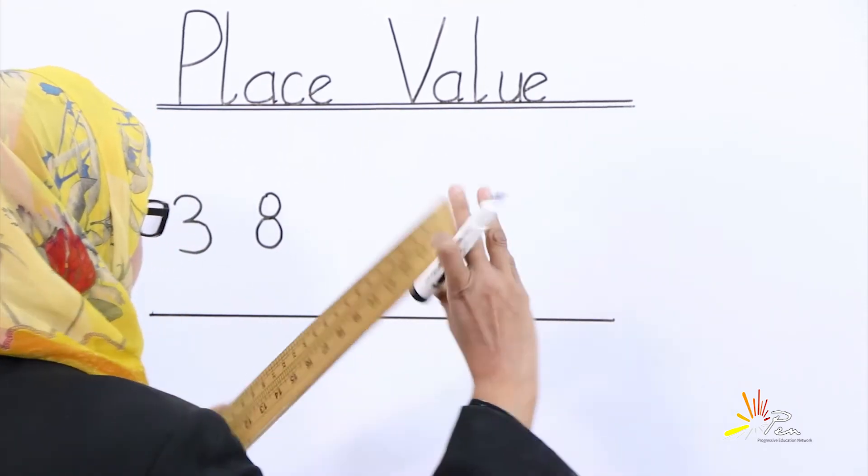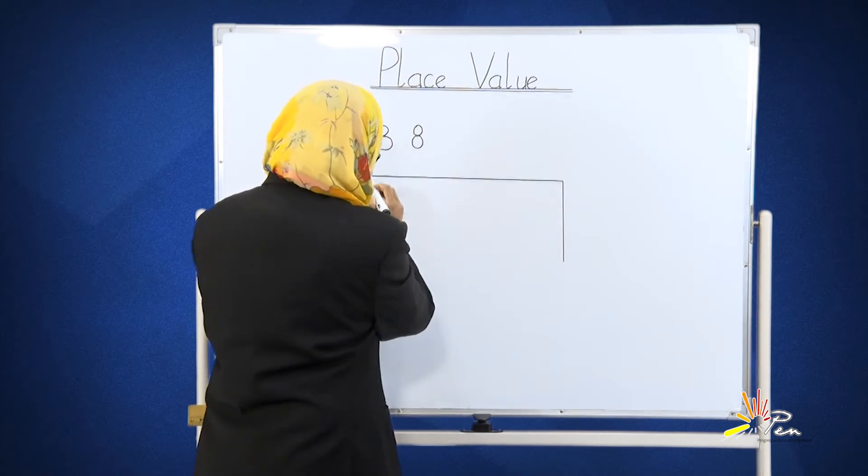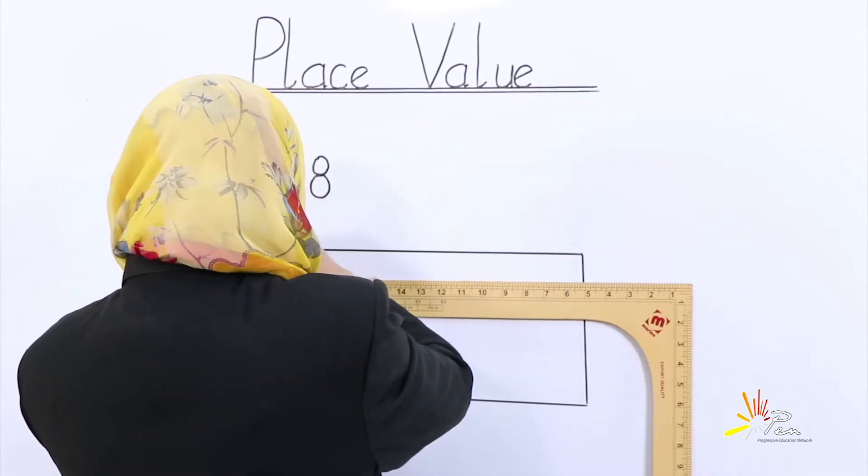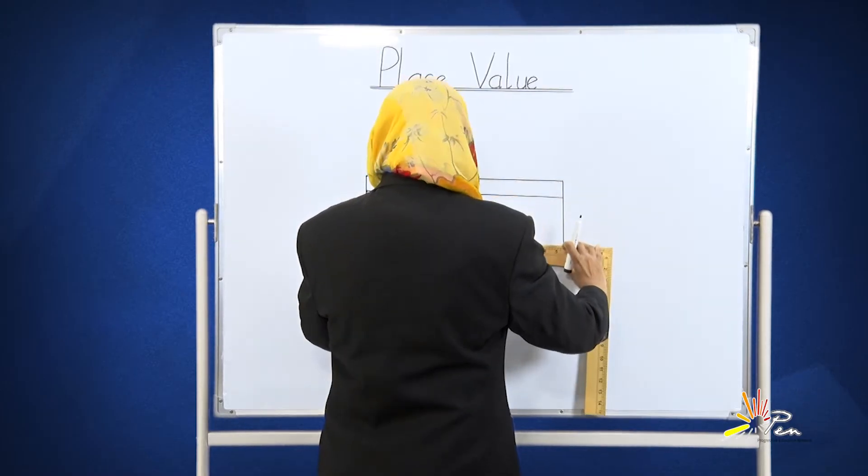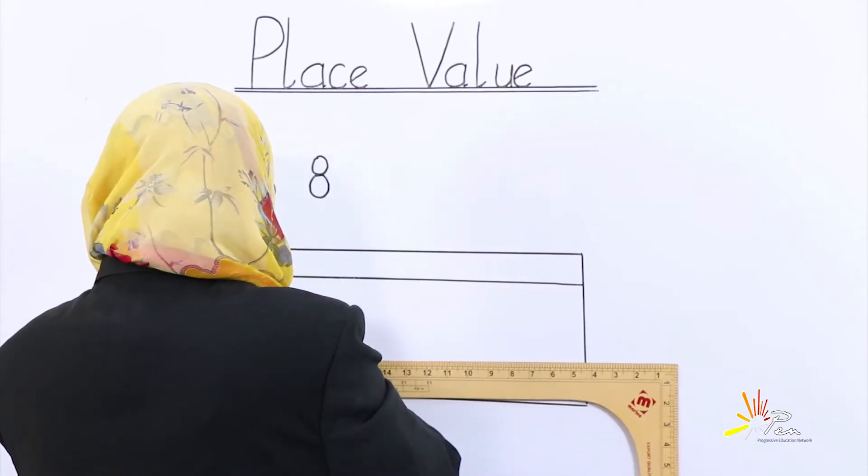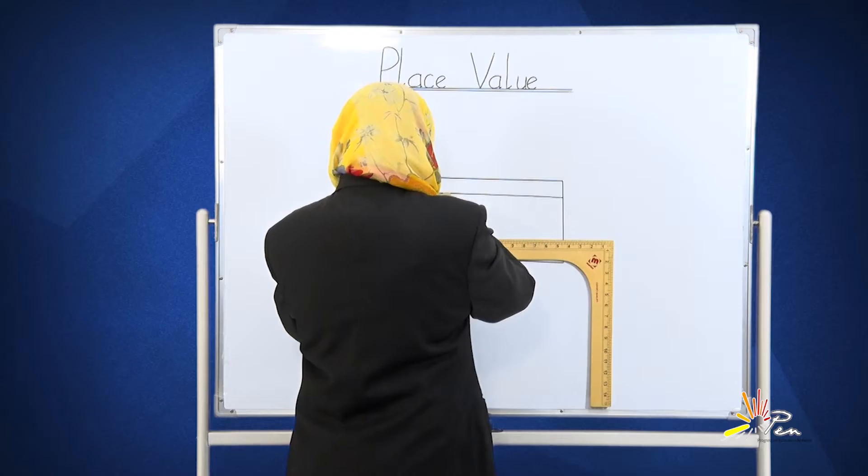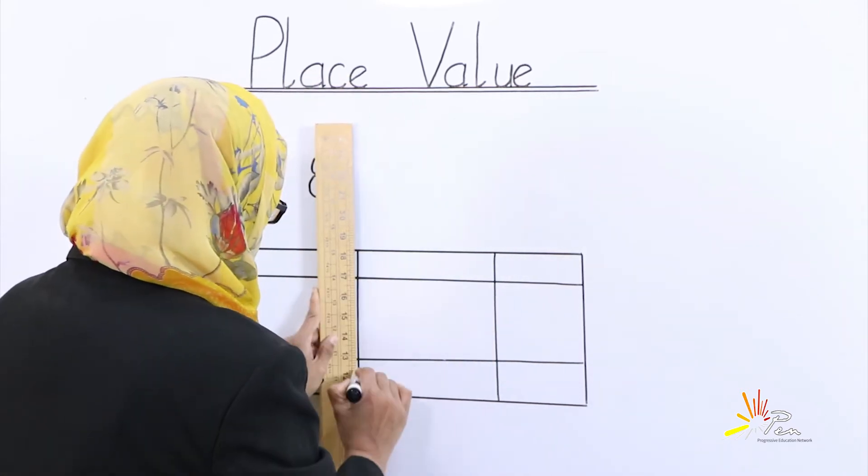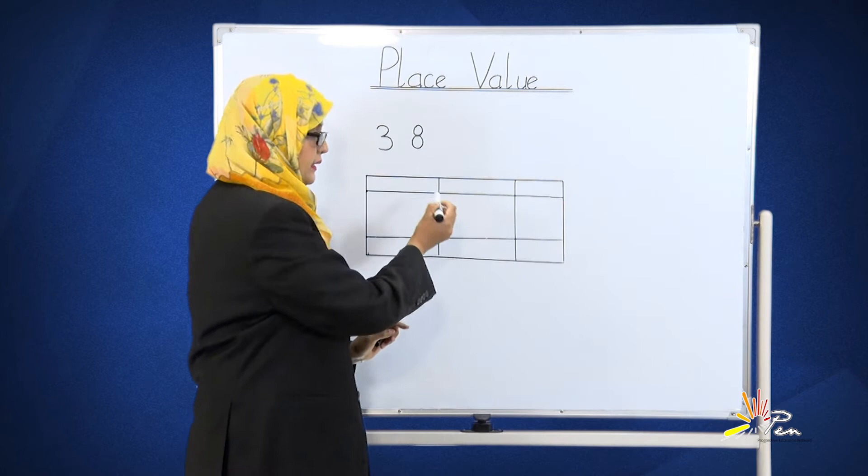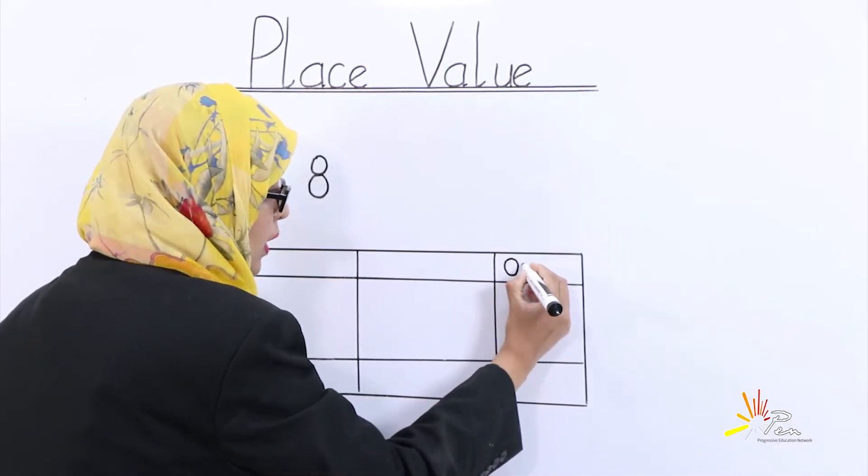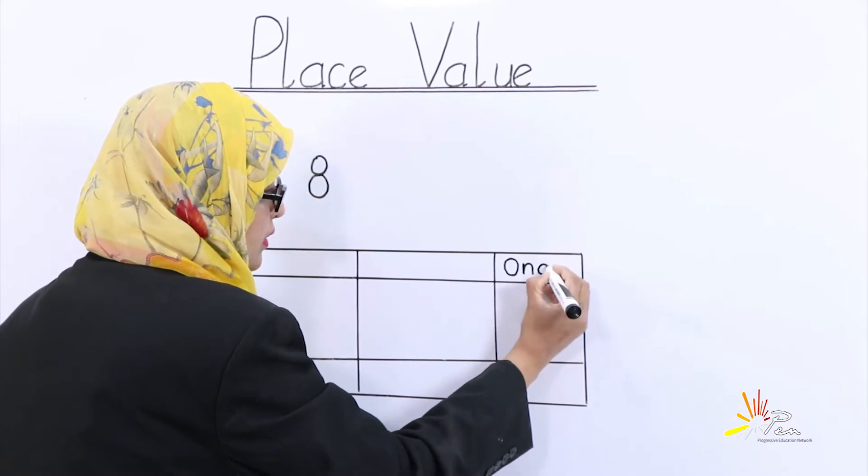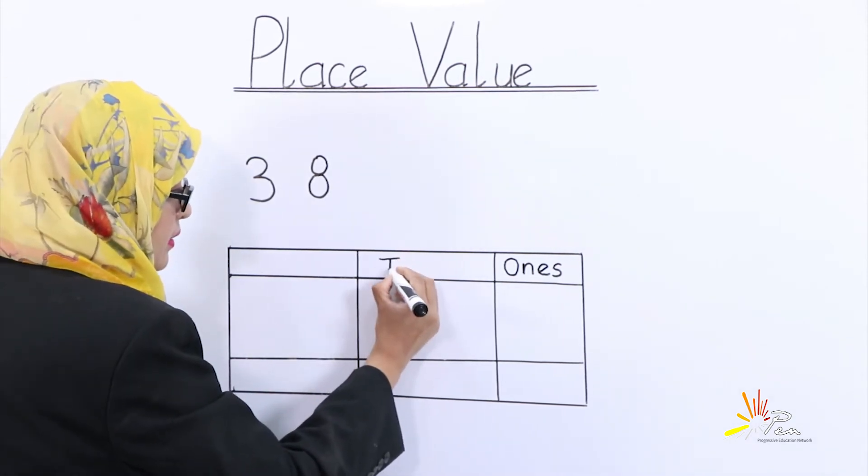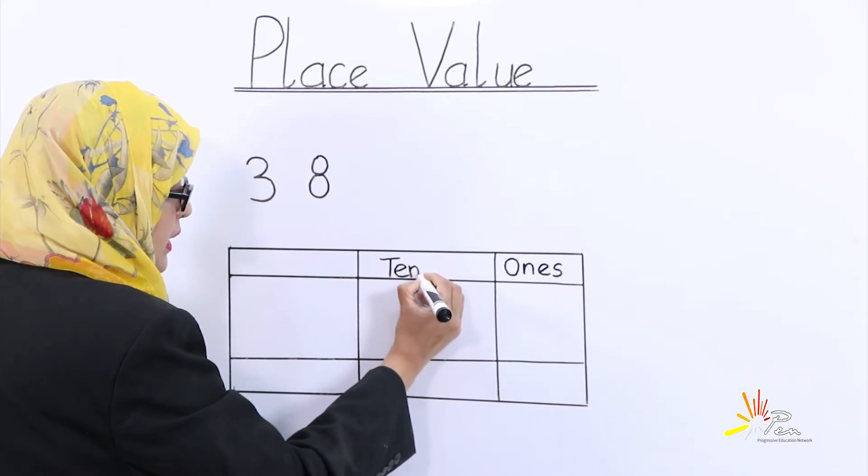You will see that it is a very easy way. Can you draw this table? After doing this, you will find that it is too much easy to find out the place value of any digit. We will draw a table like this. Here we will write ones, tens.